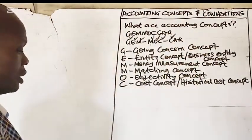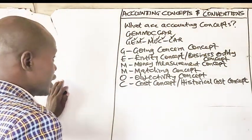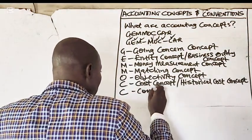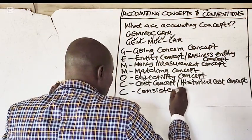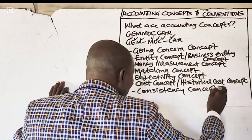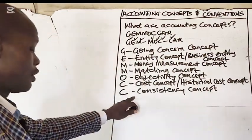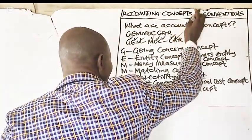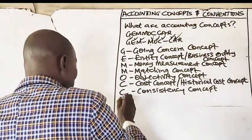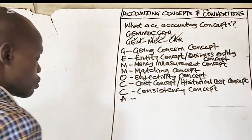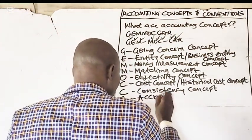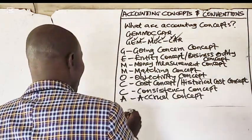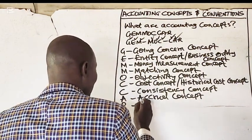C stands for cost concept, also called historical cost concept. The next C stands for consistency concept — you can also have this under convention. A stands for accrual concept. Finally, R stands for realization concept.